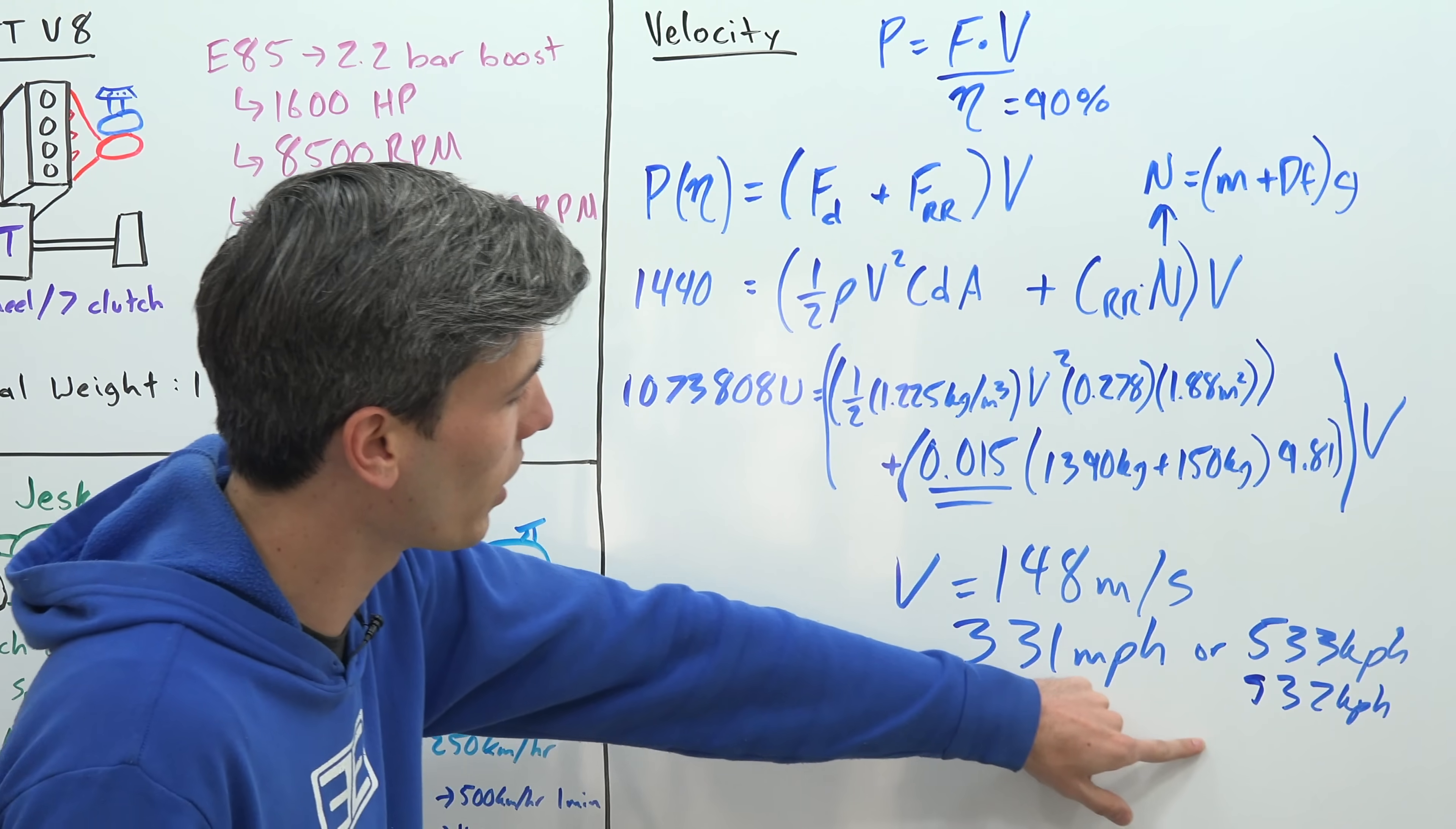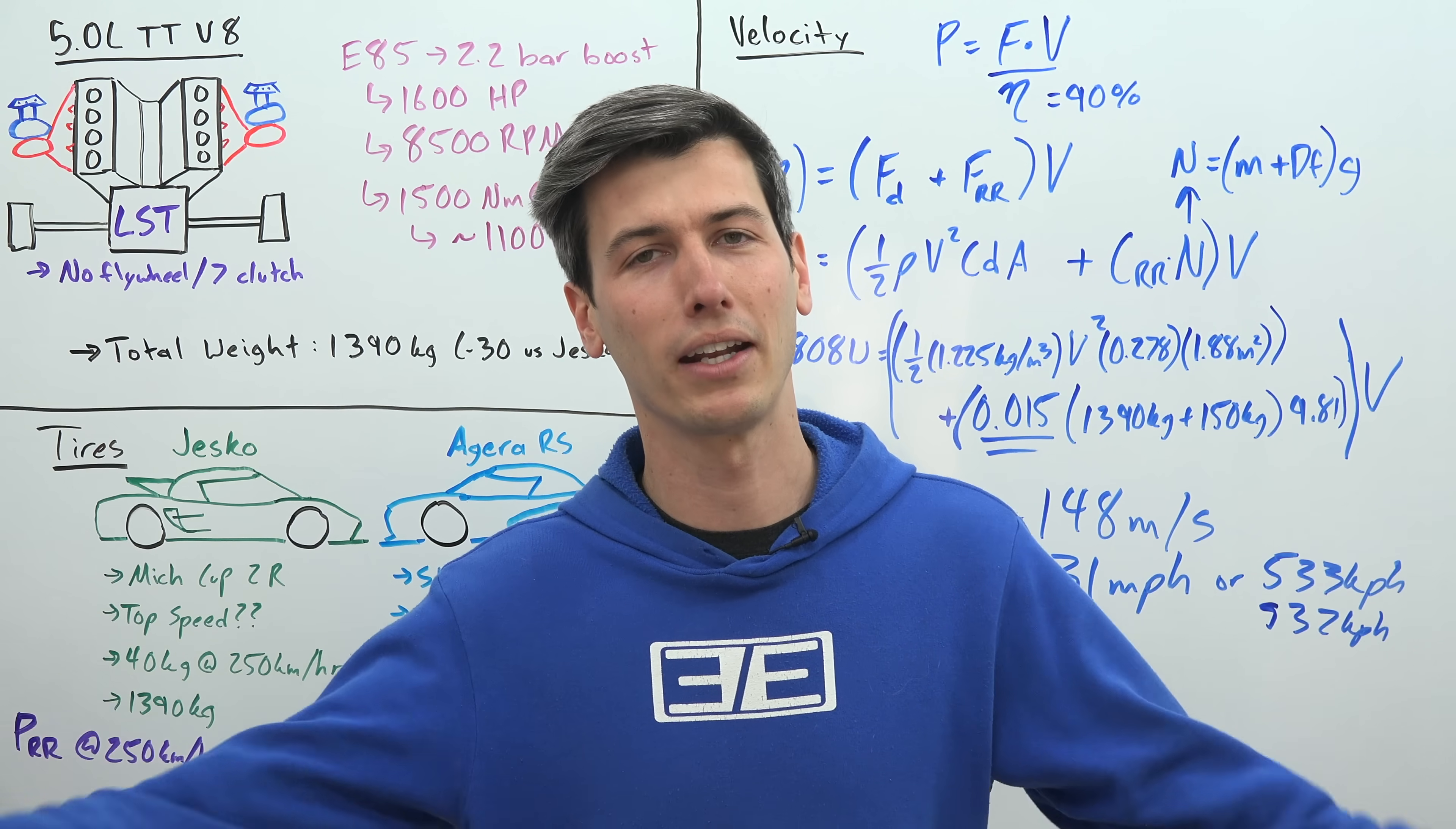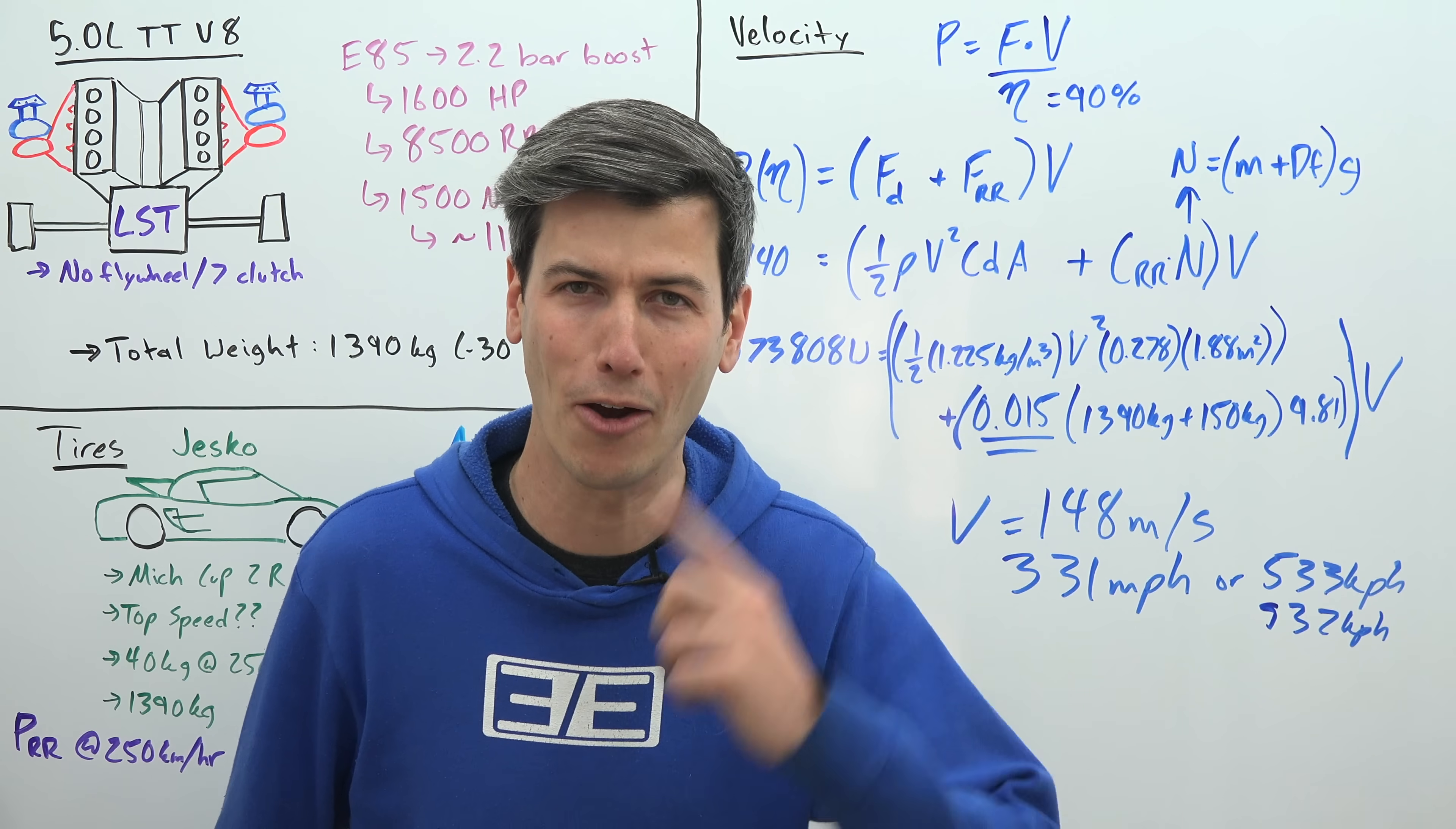Either way, this car is capable of exceeding 500 kilometers per hour. Now the Bugatti Chiron exceeded 300 miles per hour, so they will have that record forever. However, they did not exceed 500 kilometers per hour, and depending on where you live in the world, I bet one probably means a little bit more than the other. So this is potentially the first car that will be able to cross 500 kilometers per hour. How cool is that?